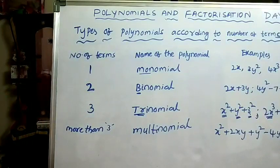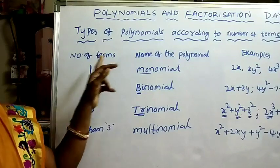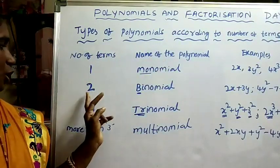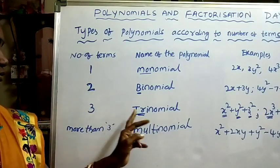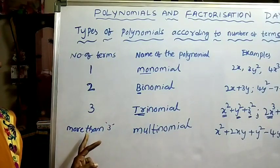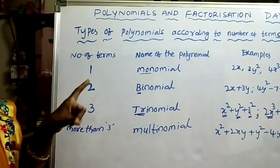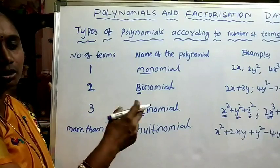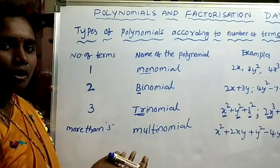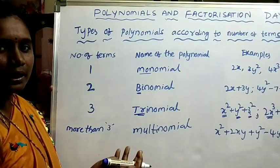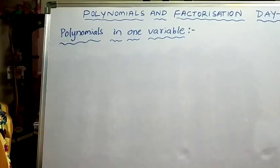So, types of polynomials according to number of terms: if a polynomial has 1 term it is a monomial; 2 terms — binomial; 3 terms — trinomial; more than 3 terms — multinomial. The naming is in the name itself: mono means 1, bi means 2, tri means 3. Types according to degree: constant polynomial (degree 0), linear (degree 1), quadratic (degree 2), cubic (degree 3), and nth degree polynomial.